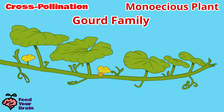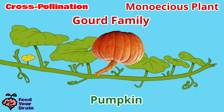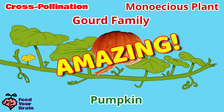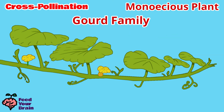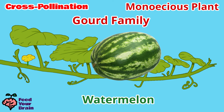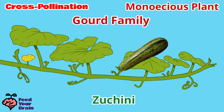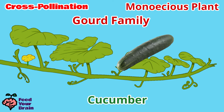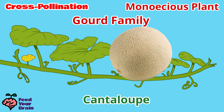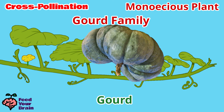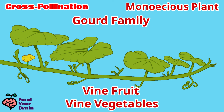From the little female flower, you end up with this large pumpkin — isn't that amazing? Or from the female flower, you end up with a large watermelon, zucchini, cucumber, cantaloupe, or gourds. All of these are vine fruits, or vegetables.